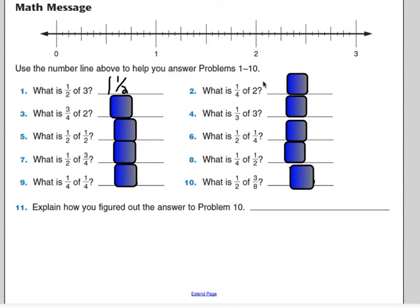Number two, what is one fourth of two? One half. If you go from zero to two, divide it into four equal parts, you're going to have divisions here, here, here. One fourth, right here, is actually at the one half point on the number line.